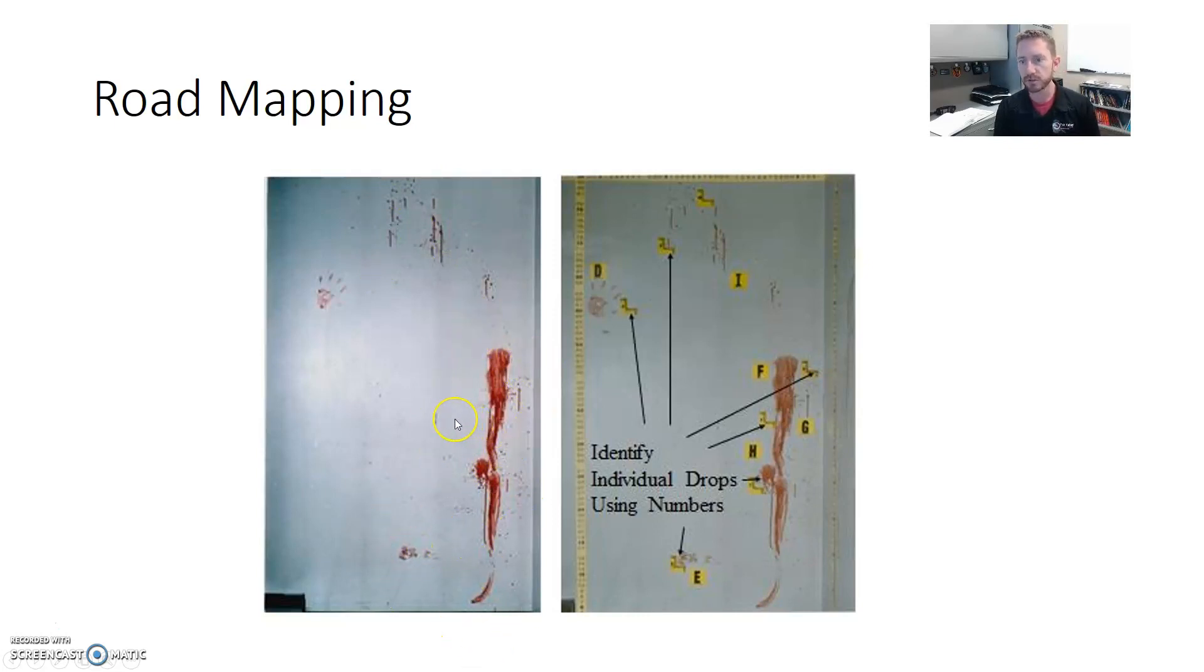So, the individual droplets that we identify as being interesting to us, we'll take and get close-up detail images of those. And then, we start applying our rulers, and then we start applying individual labels for items that we find of interest. Item one, item two, item three, item four, et cetera, as we go on through.